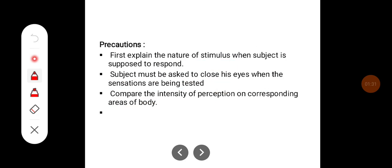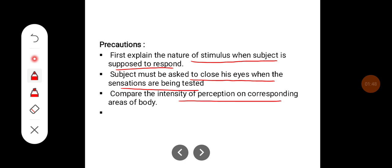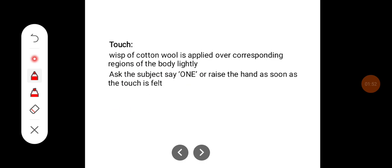While doing sensory examination, you have to take these precautions: first, explain the nature of the stimulus and when the subject is supposed to respond. The subject must be asked to close their eyes when sensations are being tested, and compare the intensity of perception on corresponding areas of the body.